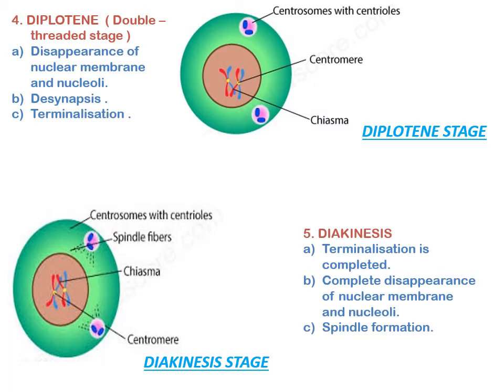In diakinesis, terminalization is completed so the non-sister chromatids of homologous chromosomes are in contact at or near the telomeres, and the bivalents appear ring-like. There is complete disappearance of the nuclear membrane and nucleoli, and finally spindle formation occurs as in mitosis.